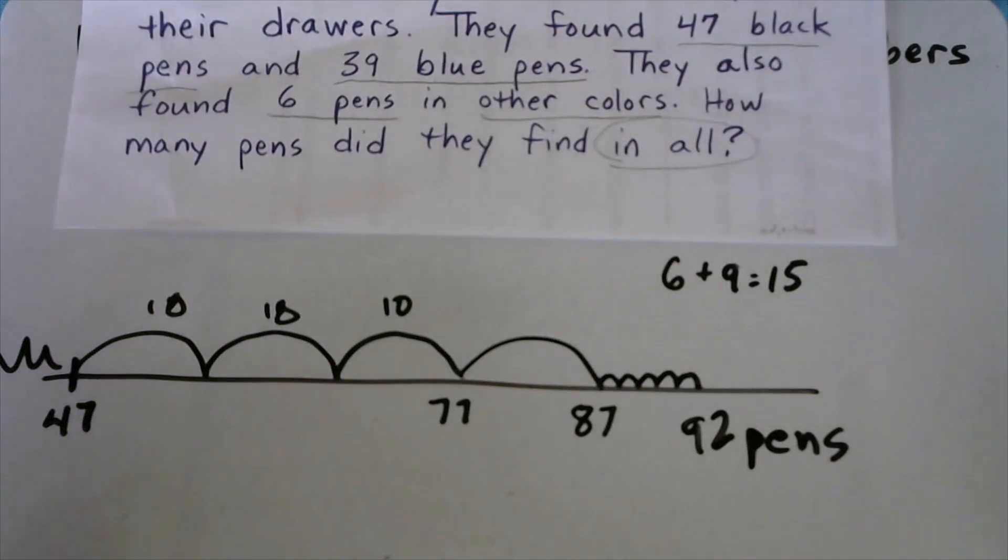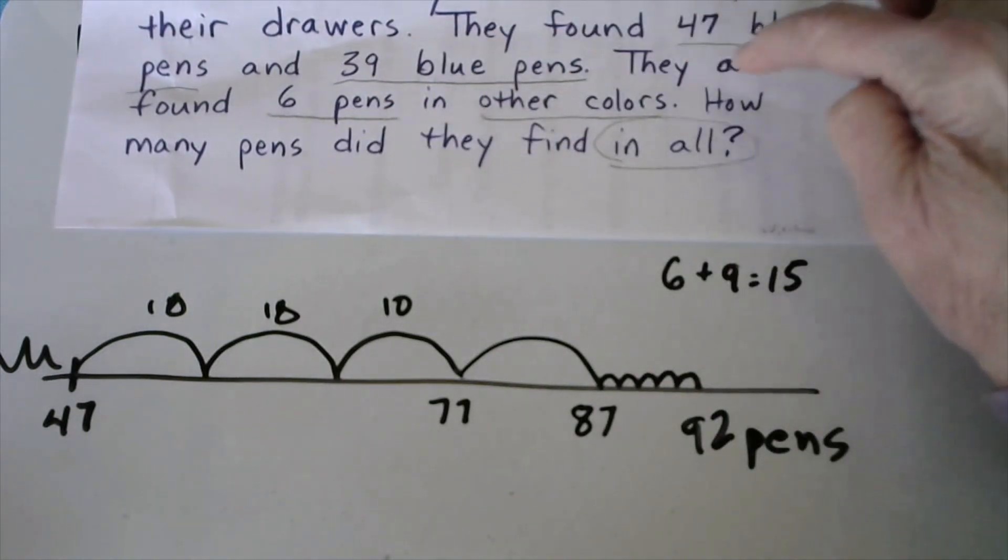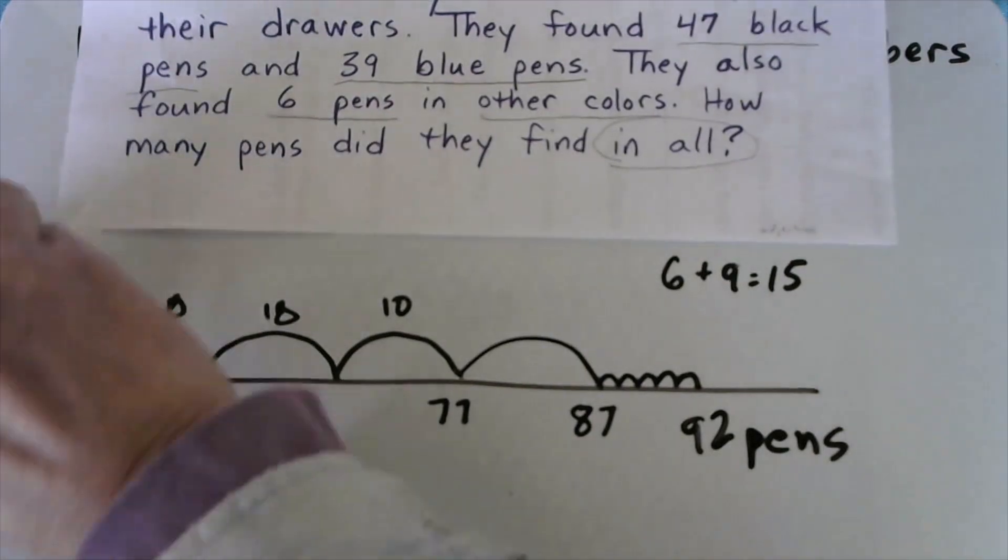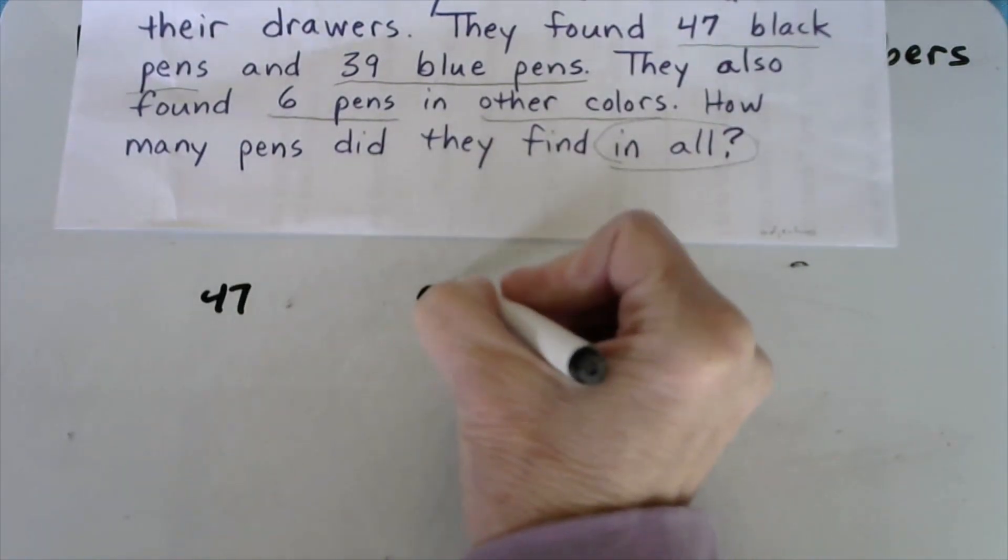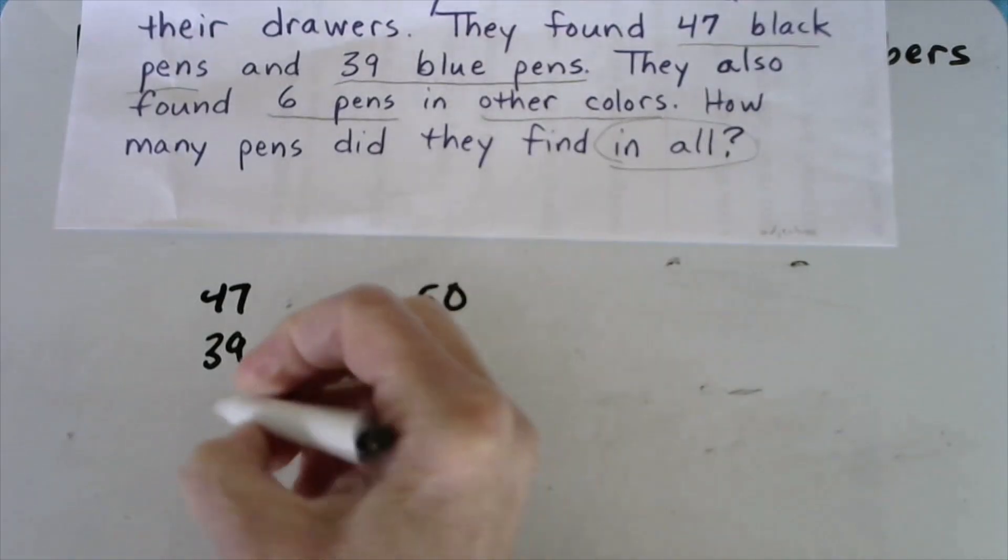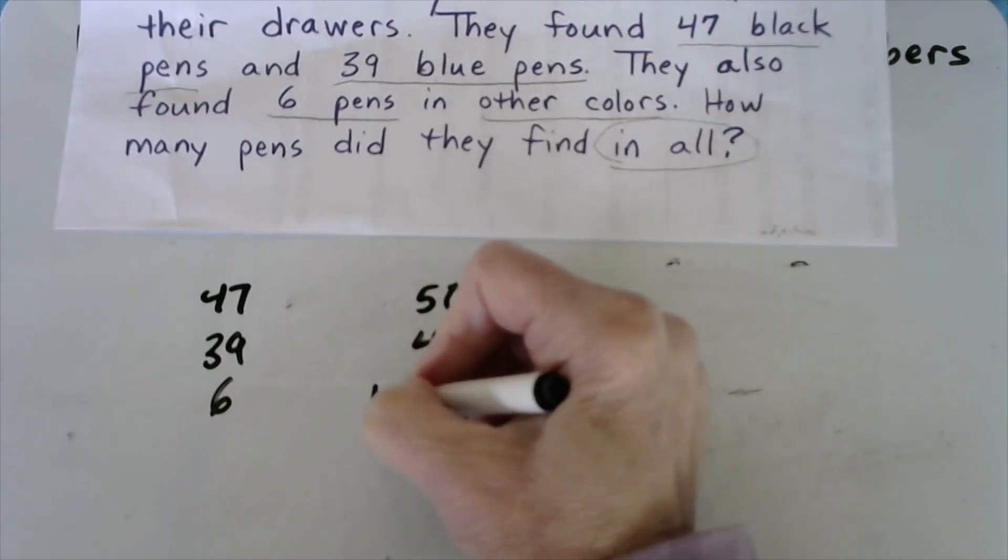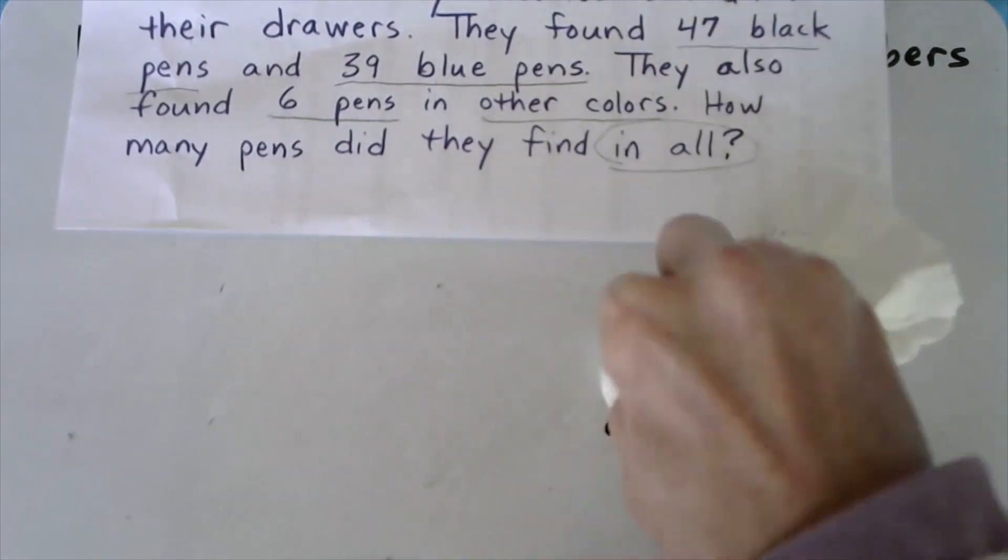So those are 3 ways you could have approached and solved that problem. And then the last thing you do is check. I'm going to round 47 to 50, I'm going to round the 39 to 40, and I'm going to round the 6 to 5. Well, 50 and 40 would be 90, and 5 would be 95, and our answer was 92 pens. So was our answer reasonable? Was it close to the estimate? Yes. So that's how we check.